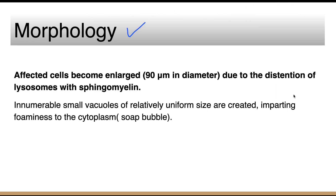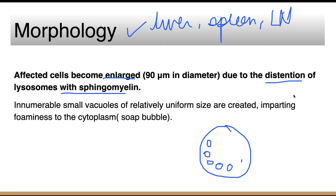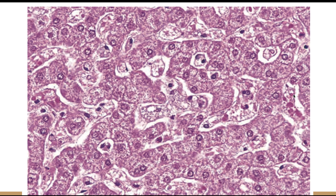Regarding morphology, the affected cells are mostly in the mononuclear phagocyte system — liver, spleen, and lymph nodes. The affected cells become enlarged due to distension of the lysosomes with sphingomyelin. In each cell, small vacuoles form, giving the appearance of a soap bubble. In this picture, you can see numerous cells with marked vacuolation giving this soap bubble appearance.